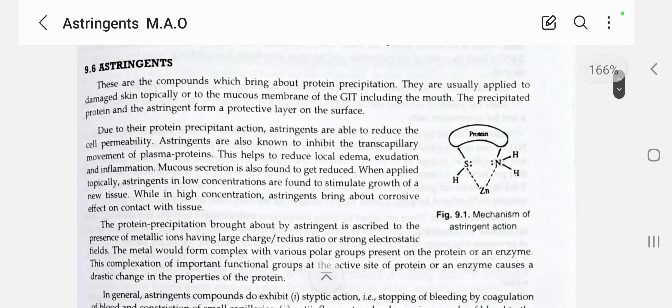Astringents are compounds which bring about protein precipitation. They are usually applied to damaged skin topically or to the mucous membrane of the GIT including the mouth.